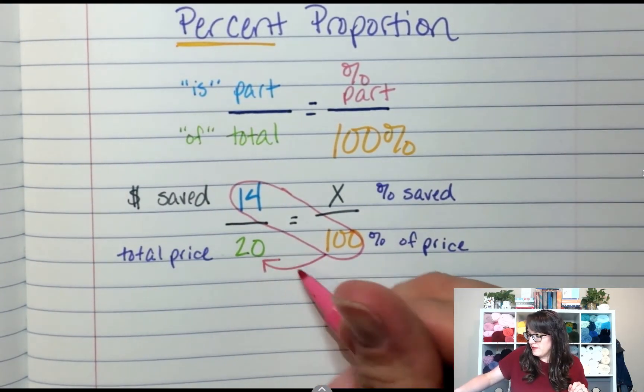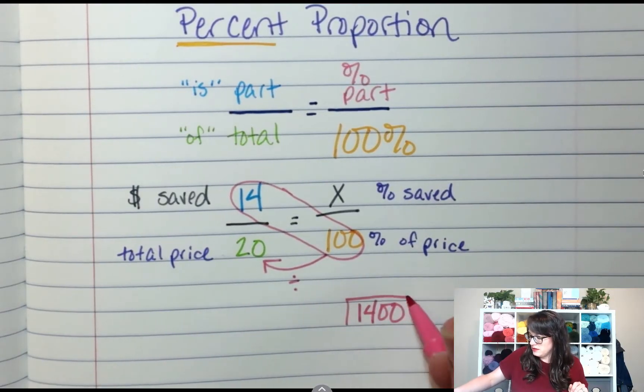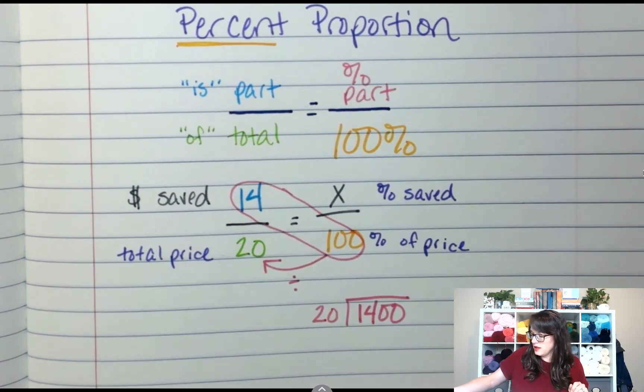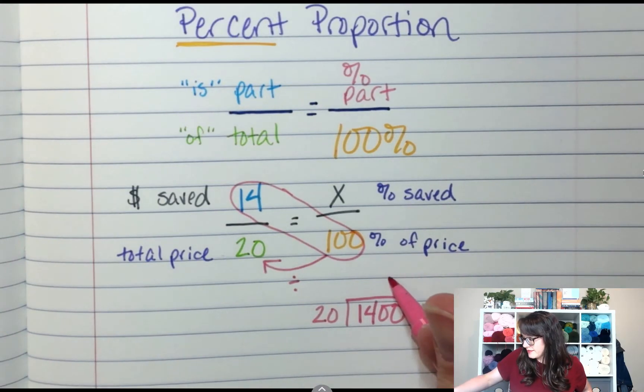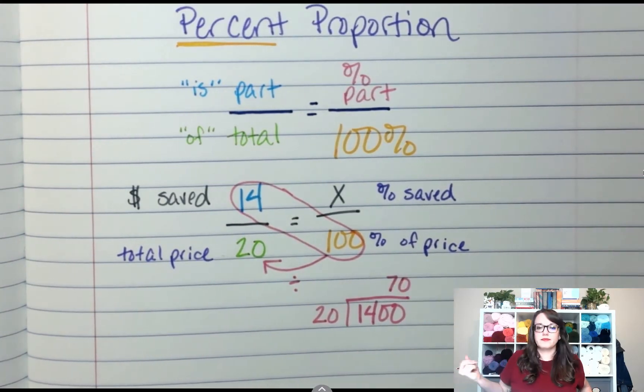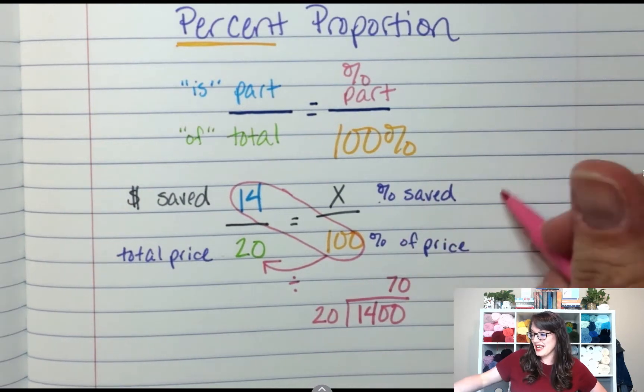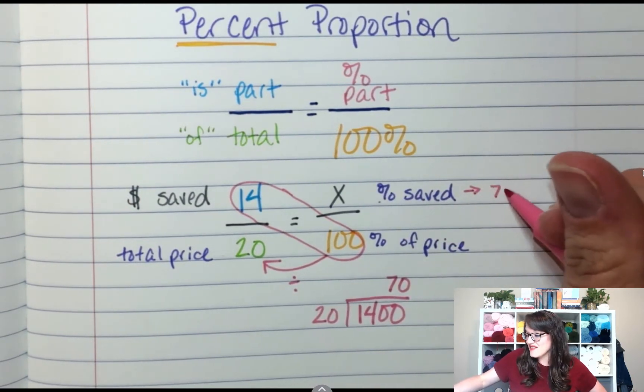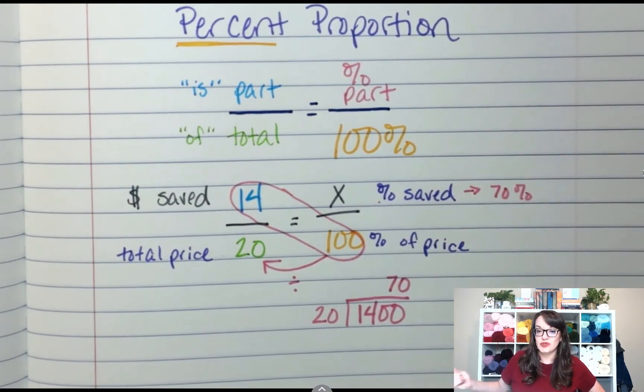And then I'm going to divide by a number. What do I divide by? 20. So I'm going to divide by 20, which is 70. So I saved 70%.